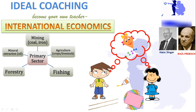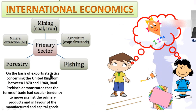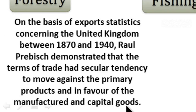The same thing is happening between developed and less developed countries. Less developed countries give more raw materials to developed countries and in return get fewer products back. Based on export statistics concerning the United Kingdom between 1870 and 1940, Raúl Prebisch demonstrated that the terms of trade had a secular tendency to move against primary products and in favor of manufactured and capital products.